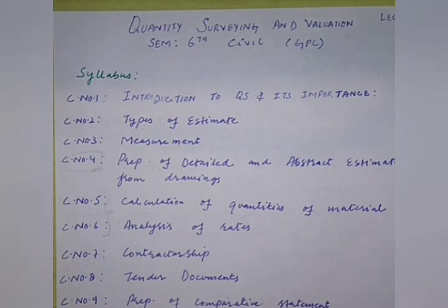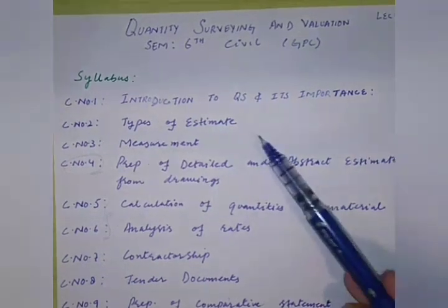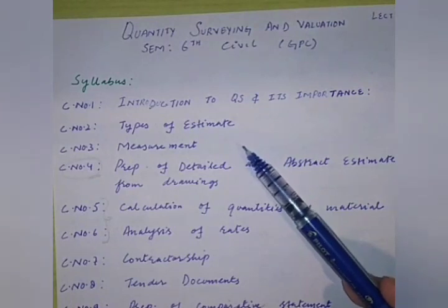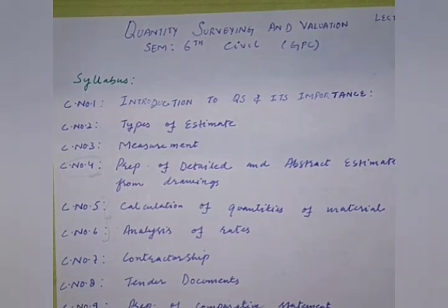Talking about the syllabus we will be discussing in this series: first of all, we will see the introduction part — what does an estimate or quantity surveying basically mean. Then we will see the different types of estimates, such as the preliminary estimate, the detailed estimate, revised estimate, supplementary estimate — there are many types and each will be discussed.